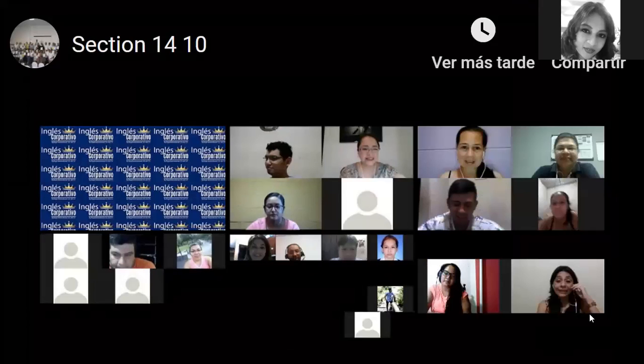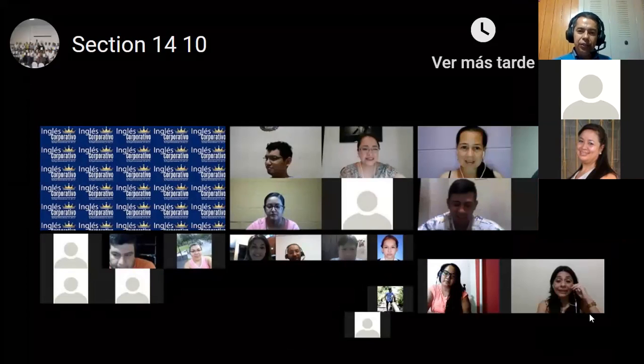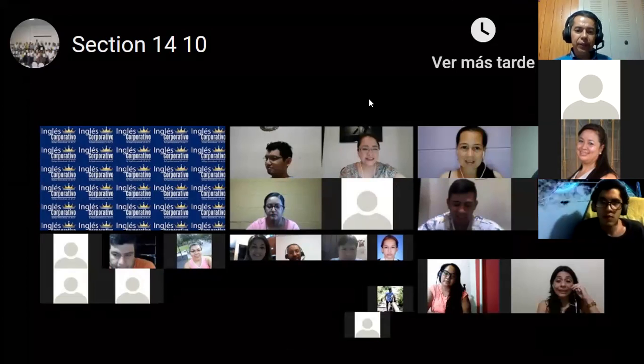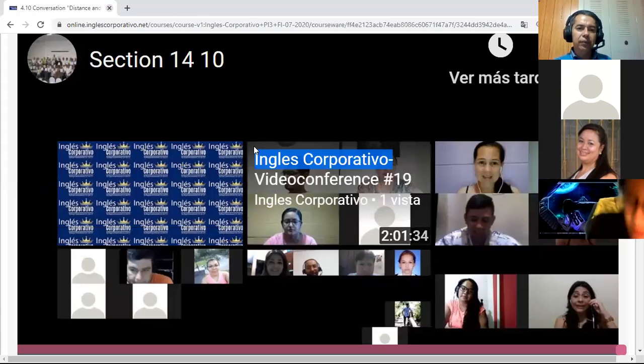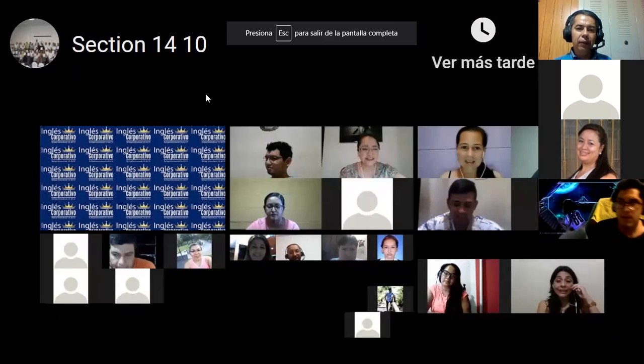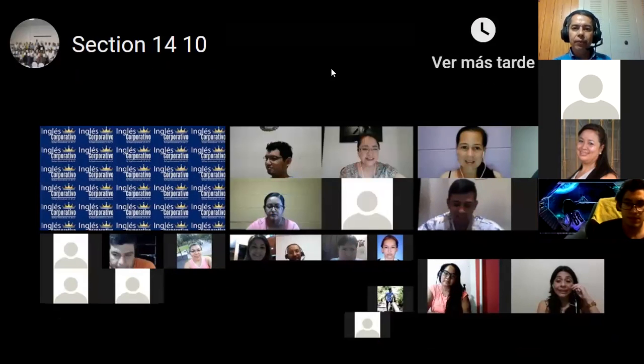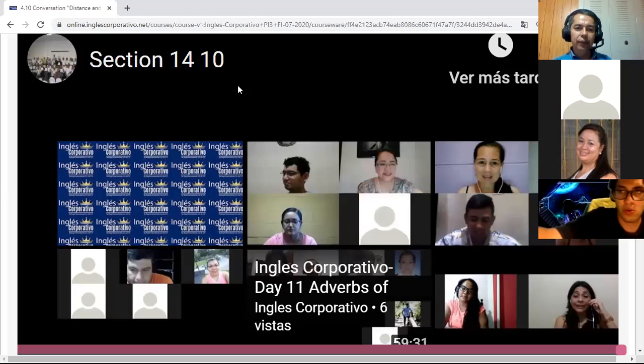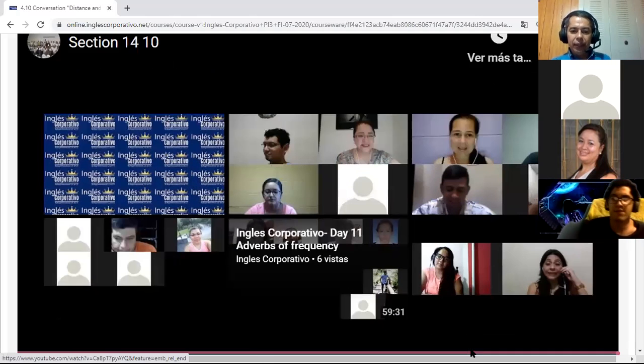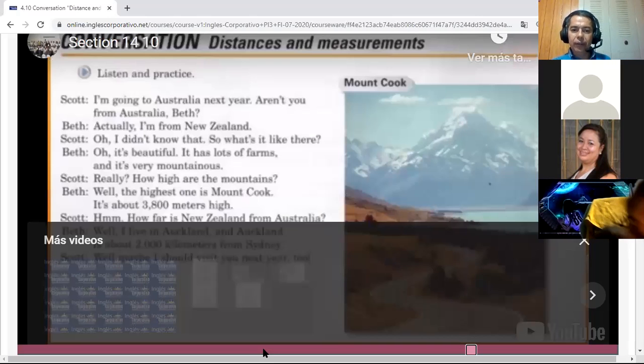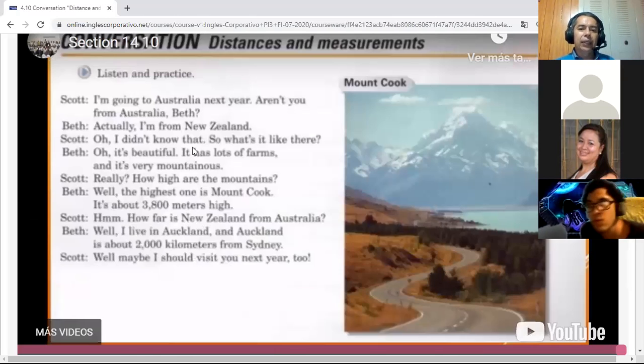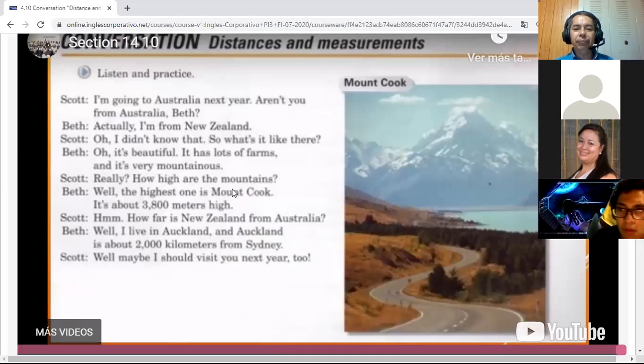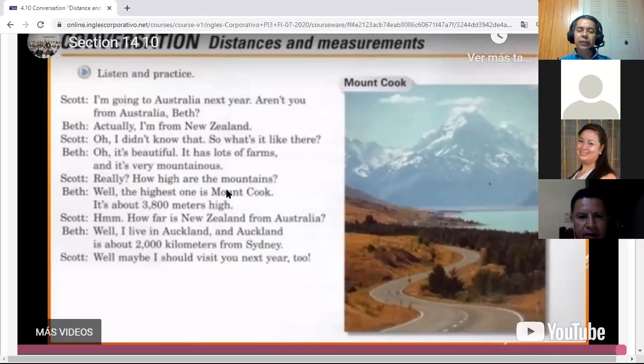Really? How high are the mountains? Well, the highest one is Mount Cook. It's about 3,800 meters high. How far is New Zealand from Australia? Well, I live in Auckland and Auckland is about 2,000 kilometers from Sydney. Well, maybe I should visit you next year too.